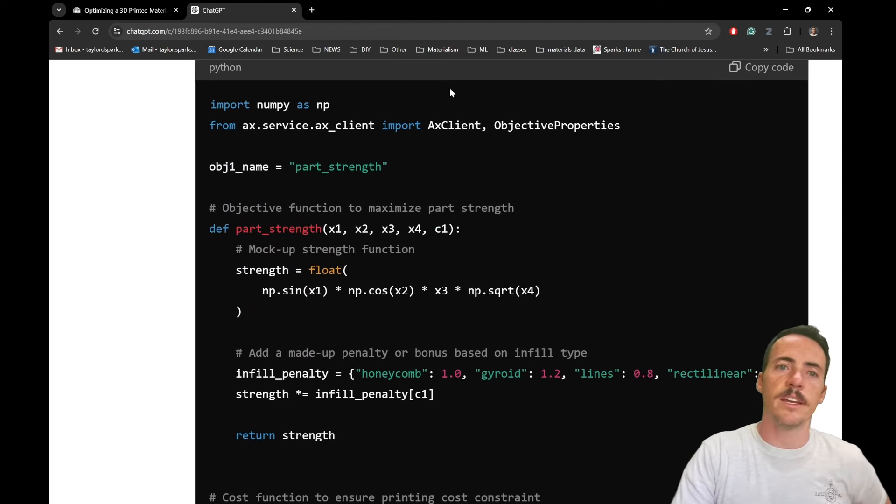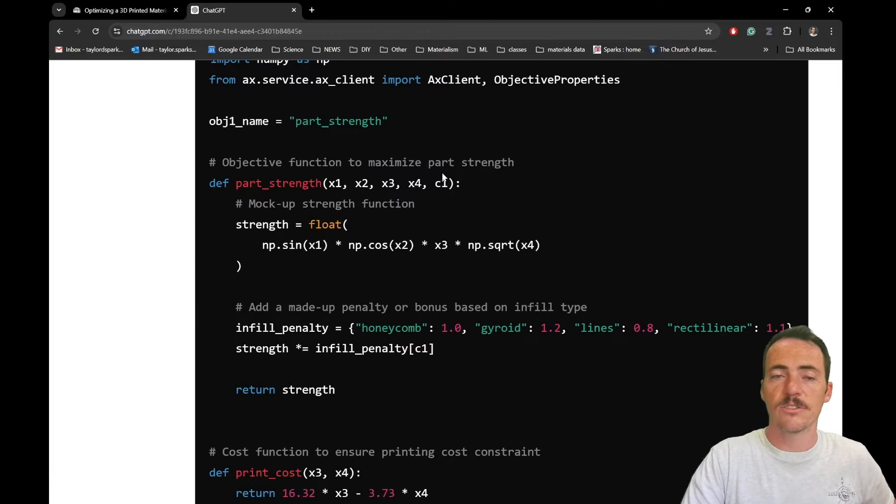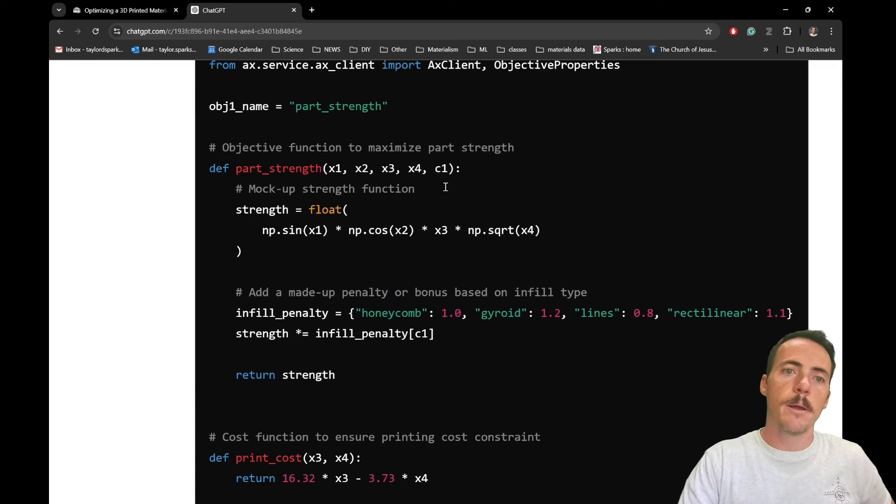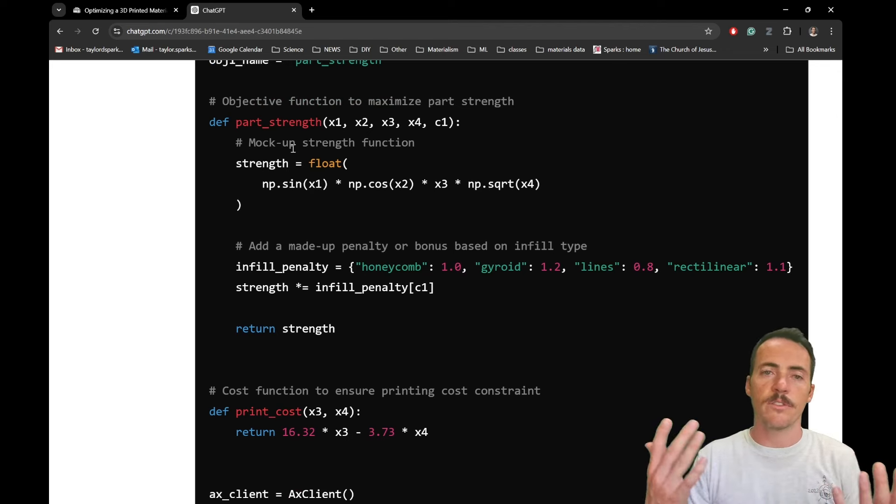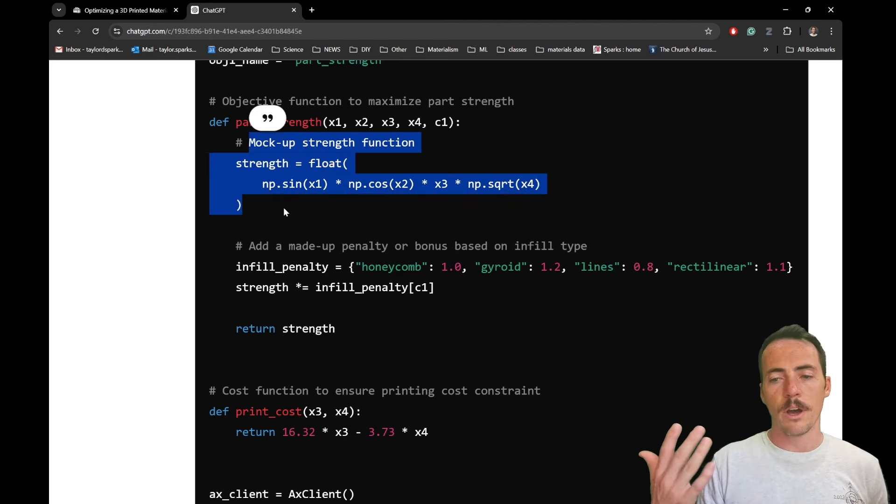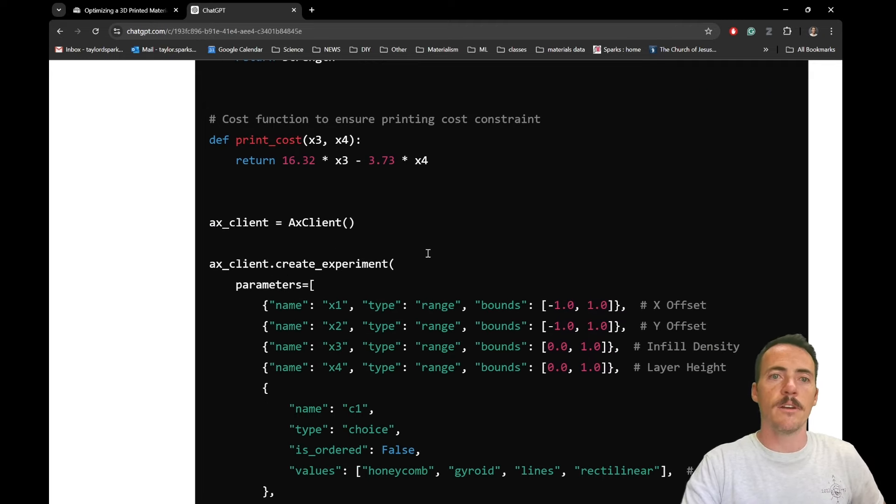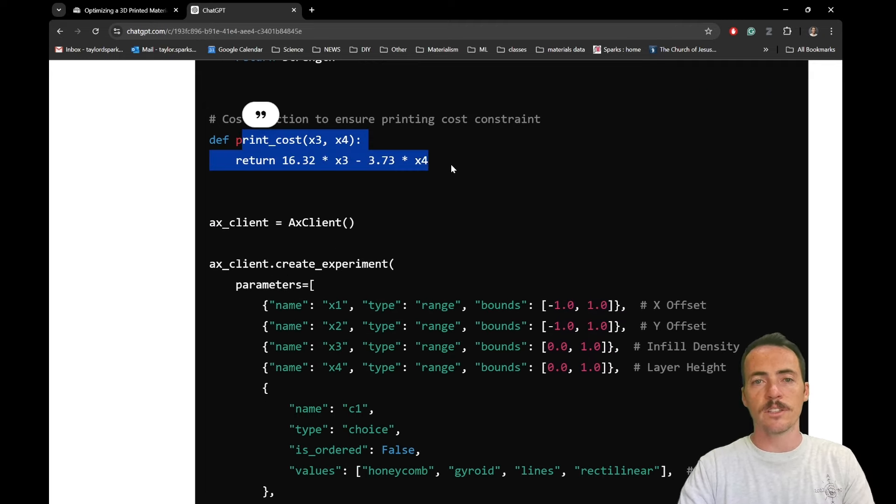So let's walk through this. First thing we see is that it's using the axe client. Its objective is now part strength. Again, it read the text that we had above and knew that we should do our primary objective as strength. It's got the four parameters here, plus the categorical ones. It's got all five. Here it's using, it says mockup strength function. So that's a dummy function. We don't know what the actual strength is from a function. Instead, that's something that you would print the part and then measure the strength. So this right here is just a temporary one so that you have something in place as an objective function. It's a dummy one though.